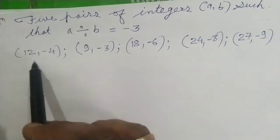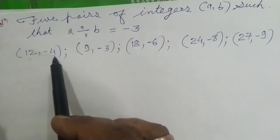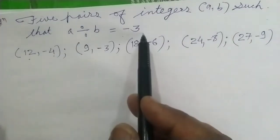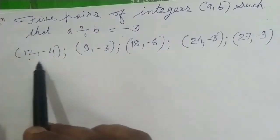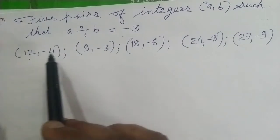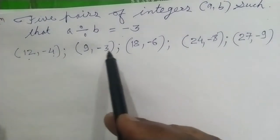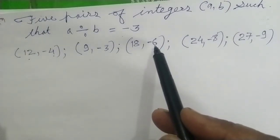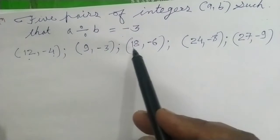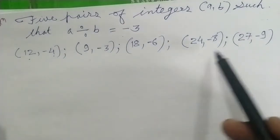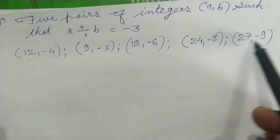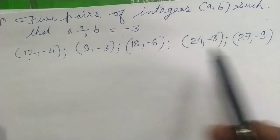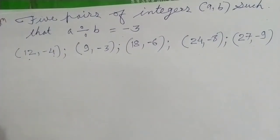ये A और B की values हैं। A is divided by B, we will get minus 3. Summary: (12, −4): 4×3=12, minus 3. (9, −3): 3×3=9, minus 3. (18, −6): 6×3=18, minus 3. (24, −8): 8×3=24, minus 3. (27, −9): 9×3=27, minus 3. These are the 5 pairs.